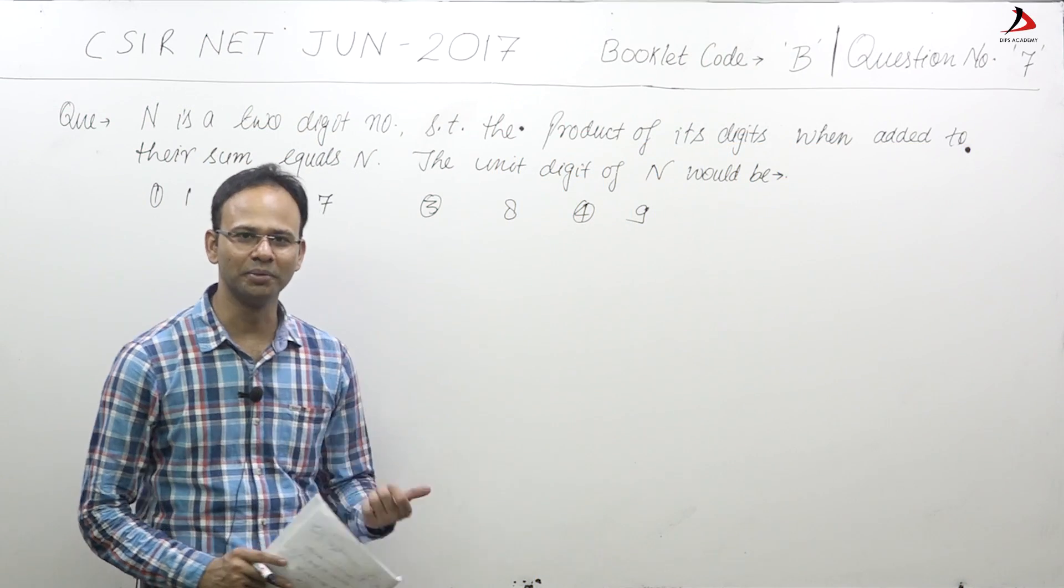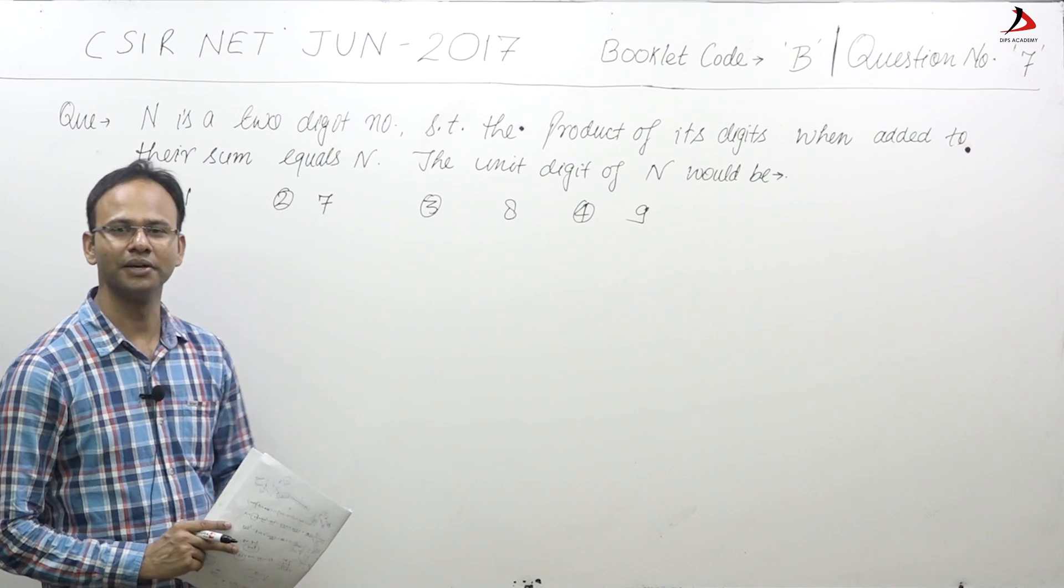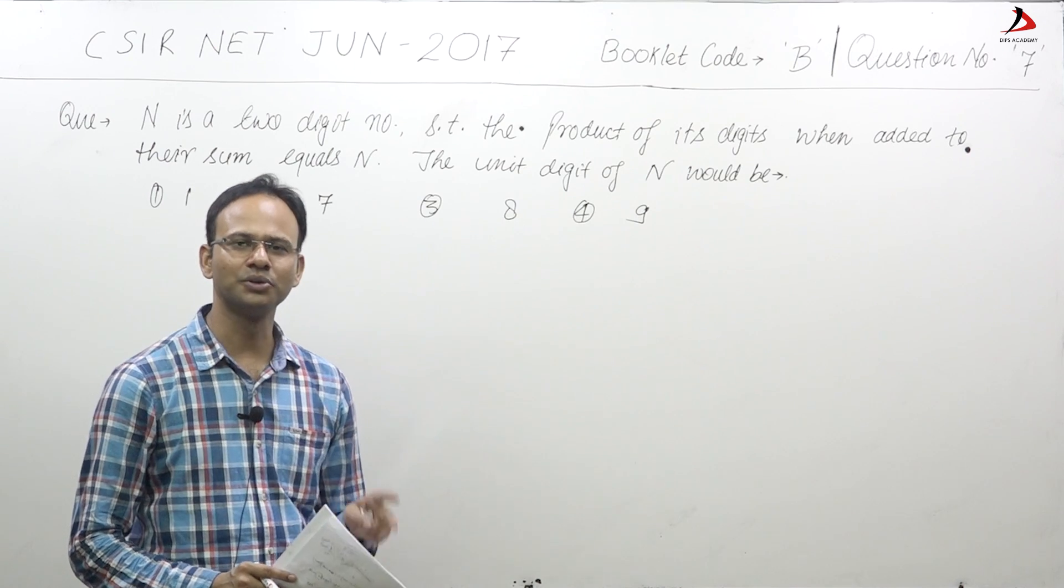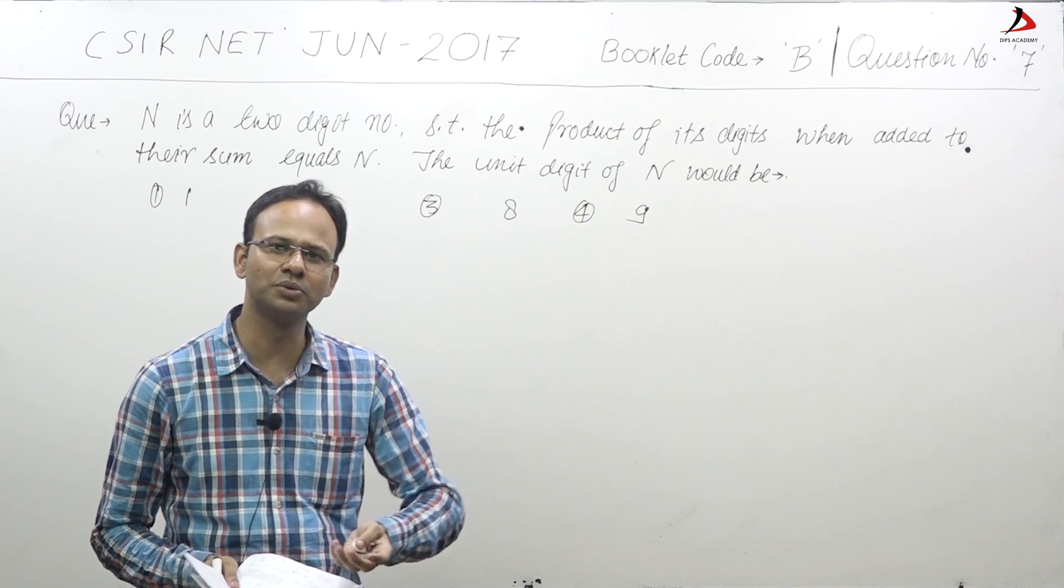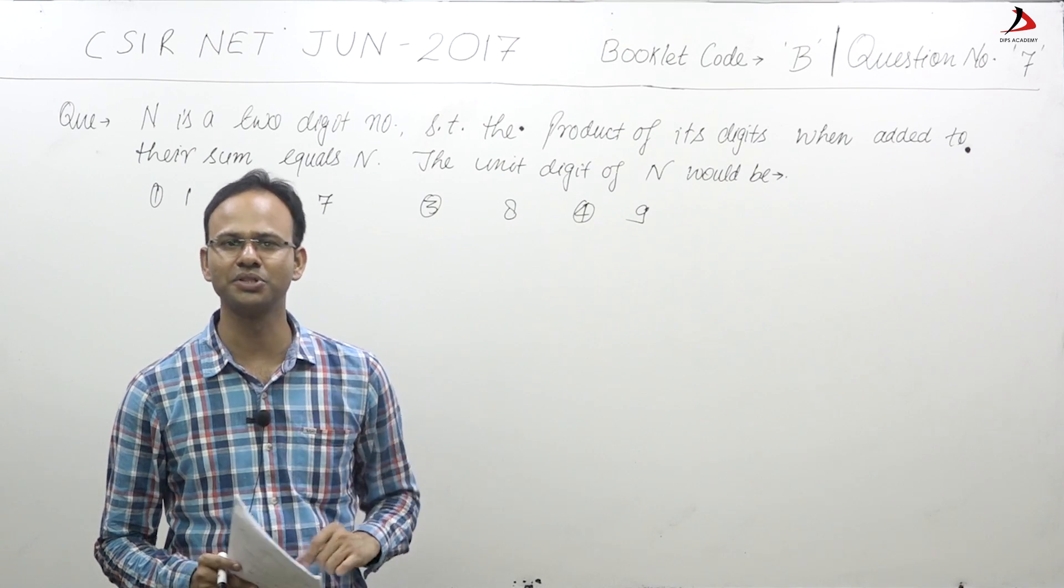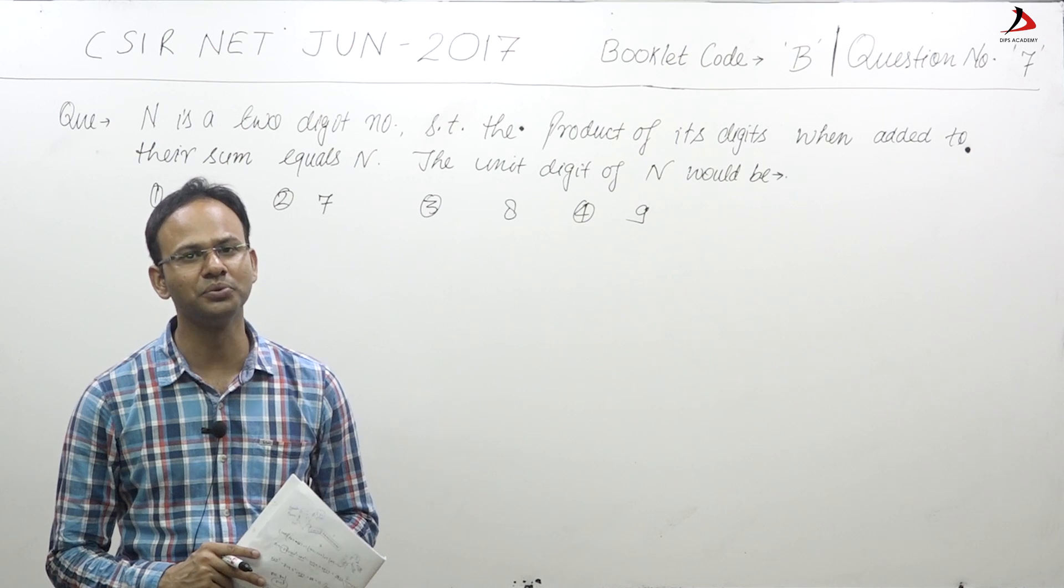Let us take one more question of booklet B, question number 7 of part A. Question number 7 says n is a two digit number. If the product of the digits of n is added to the sum of the digits of n, it equals n itself. What will be the unit digit of the number?